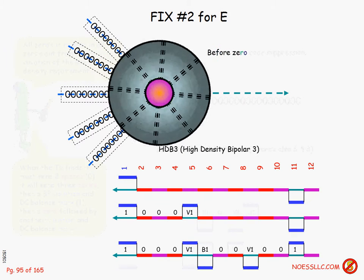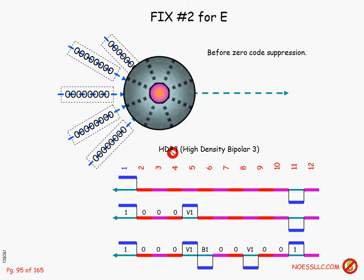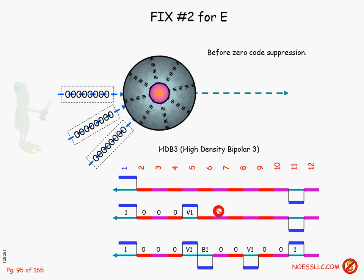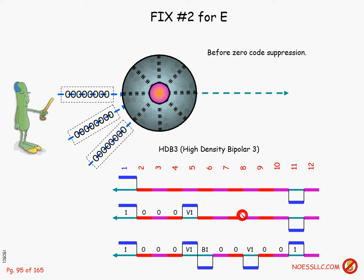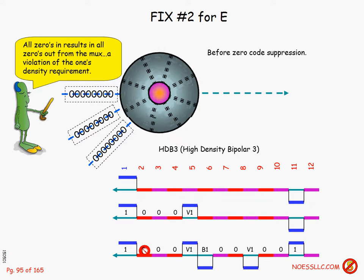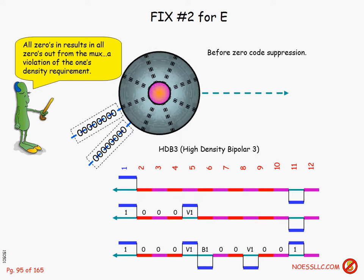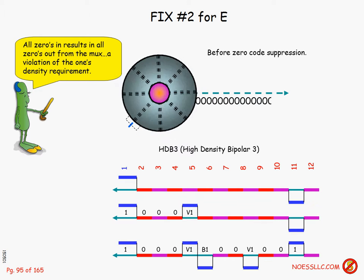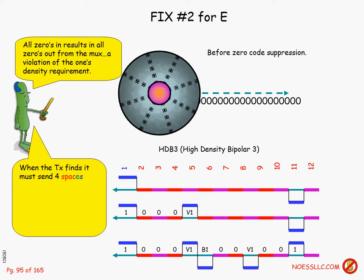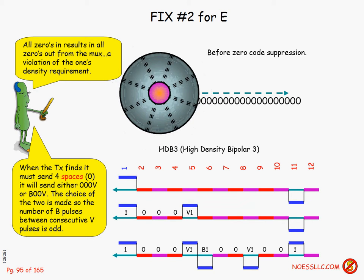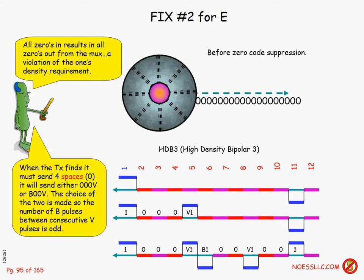For the E-carrier, the same concept applies but it's called HDB3 — High Density Bipolar 3. It's the same idea: intentional violations are sent, and the receiver strips off those violations and balance bits and delivers all zeros to the customer, because that's what the customer at the other end was actually sending.